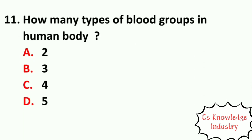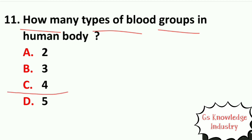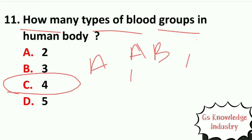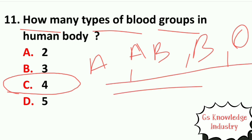Question eleven: how many types of blood groups are in the human body? Option A, 2. Option B, 3. Option C, 4. Option D, 5. The right answer is Option C — there are 4 blood groups: A, AB, B, and O.